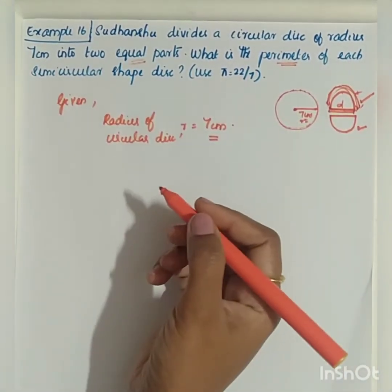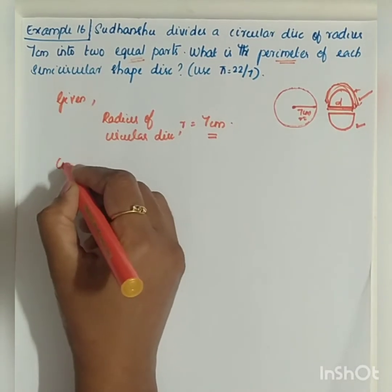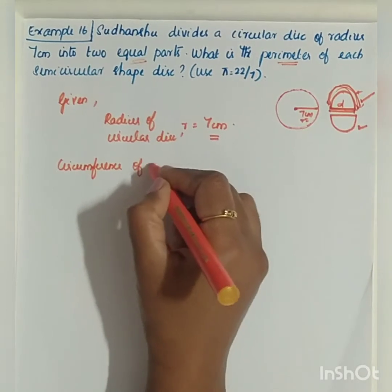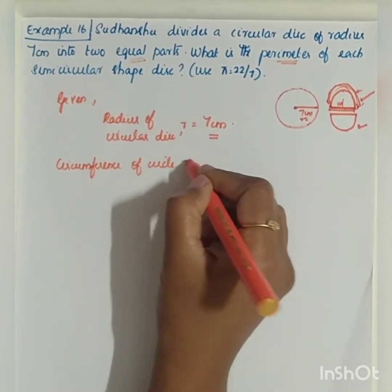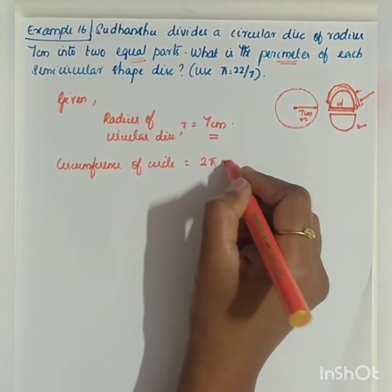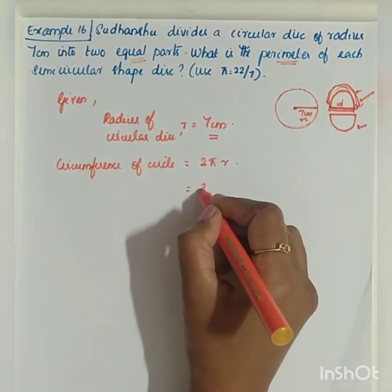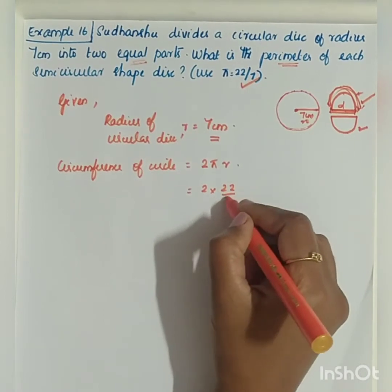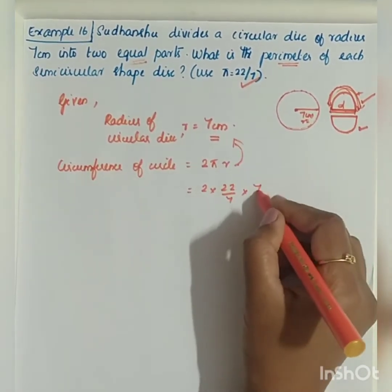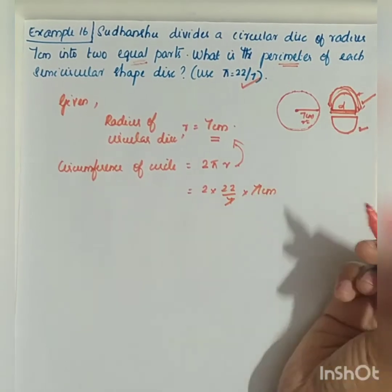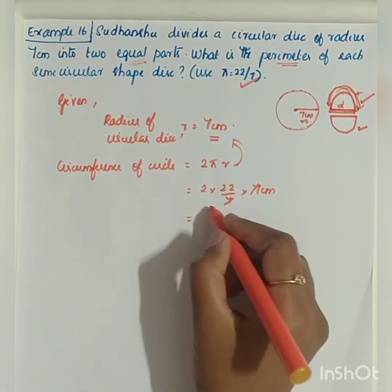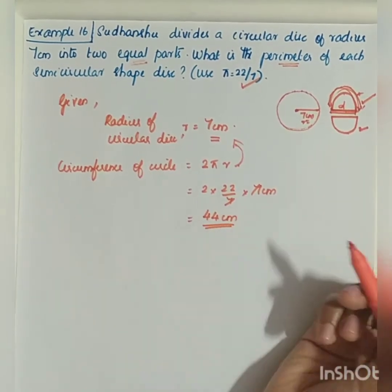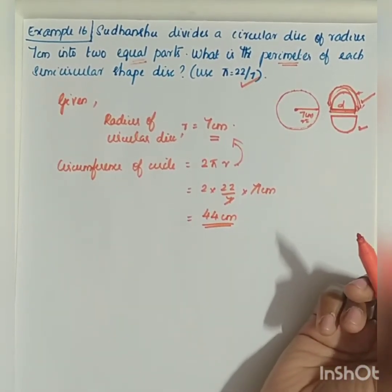Can we find out the circumference of the circle? The circumference of the circle formula is 2πr. The value is 2 into π, which is 22/7, into r which is 7 cm. The 7s get cancelled, so the circumference of the circle is equal to 44 cm.